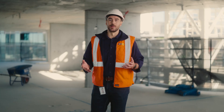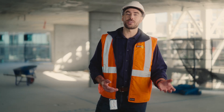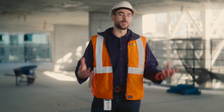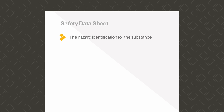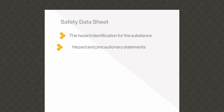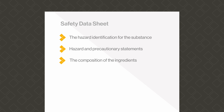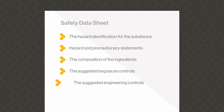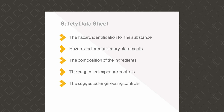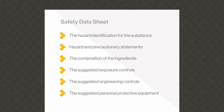If you work with a hazardous substance, you can review a safety data sheet from the manufacturer or supplier and find crucial information including the hazard identification for the substance, hazard and precautionary statements, the composition of ingredients, the suggested exposure controls, the suggested engineering controls, and the suggested personal protective equipment.